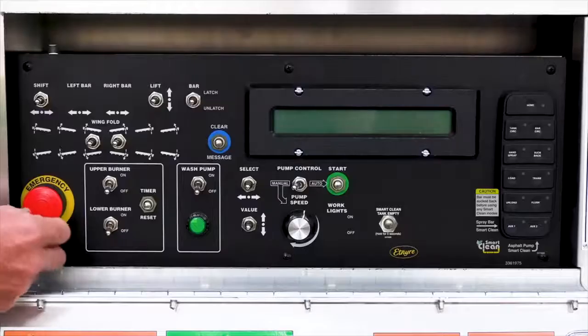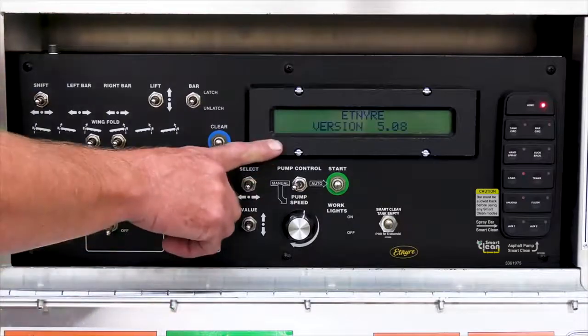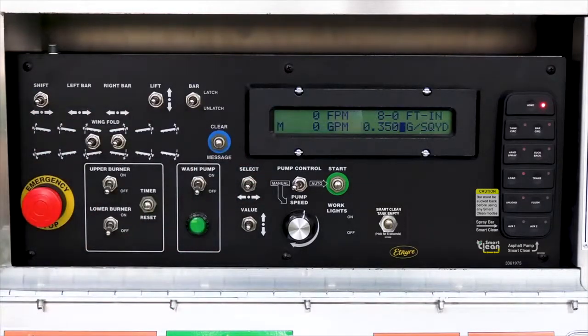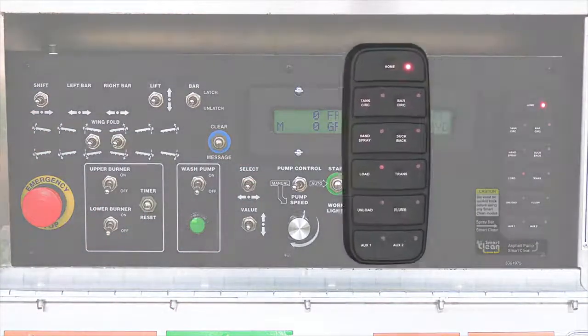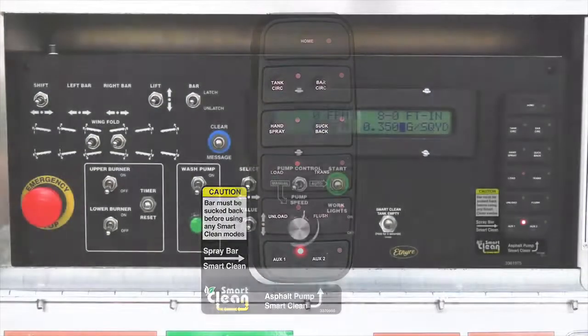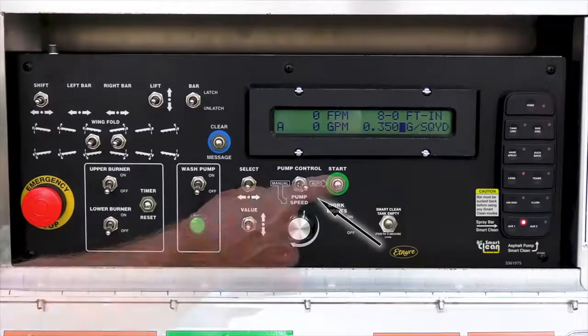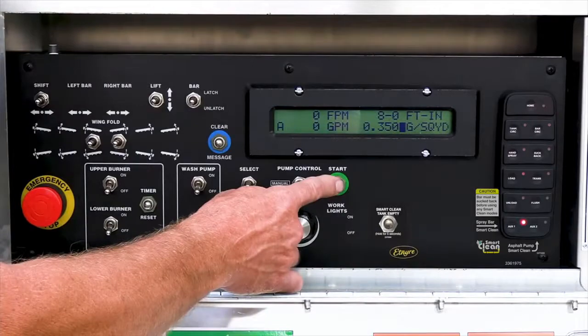At the rear control panel, turn the emergency stop switch on. Press the auxiliary one spray bar SmartClean button on the function keypad. Put the pump control to auto and press start. The pump will start turning at a preset circulation rate of 200 gallons per minute for two minutes.